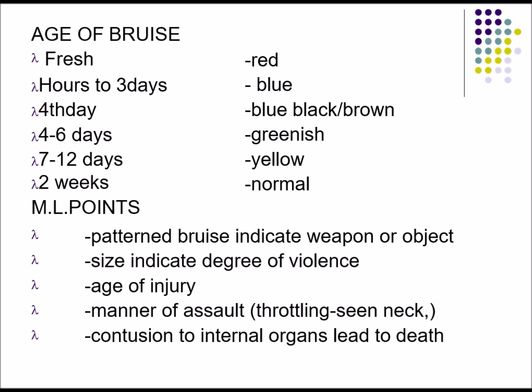Regarding age changes in bruises: initially there is oxygenated blood in the capillaries or venules, so the initial color is red. After hours to three days, deoxygenation of blood and formation of reduced hemoglobin leads to bluish discoloration. On the fourth day the contusion becomes blue-black or brown.